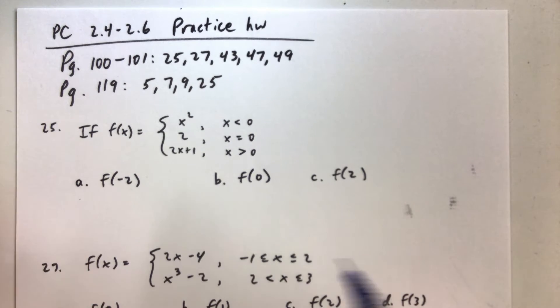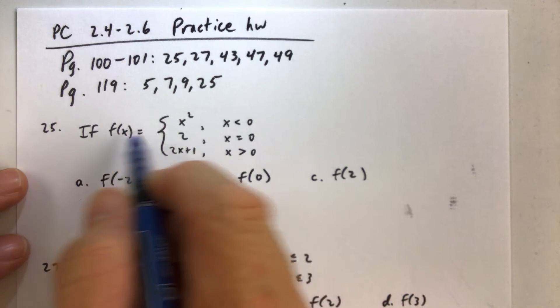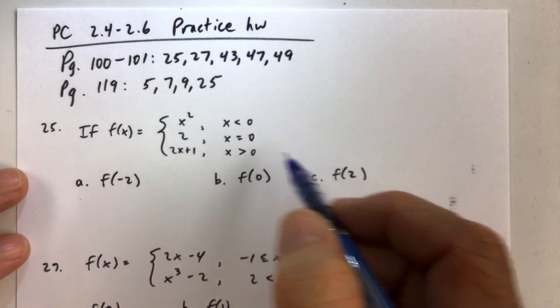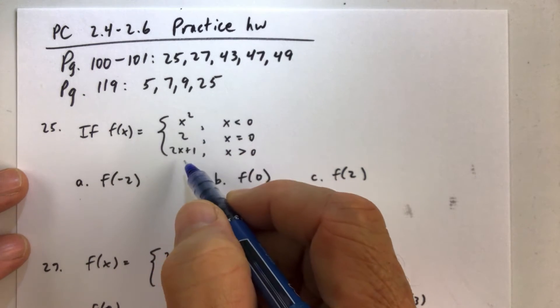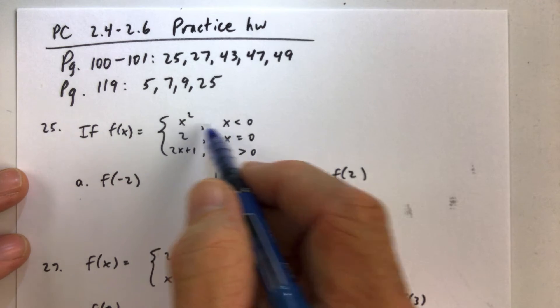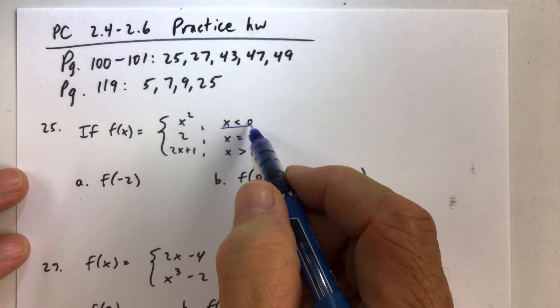All right, so let's look at problem number 25. We are given a piecewise function. f of x is made up of three pieces. One piece, the first piece, is defined only when the inputs are less than 0.